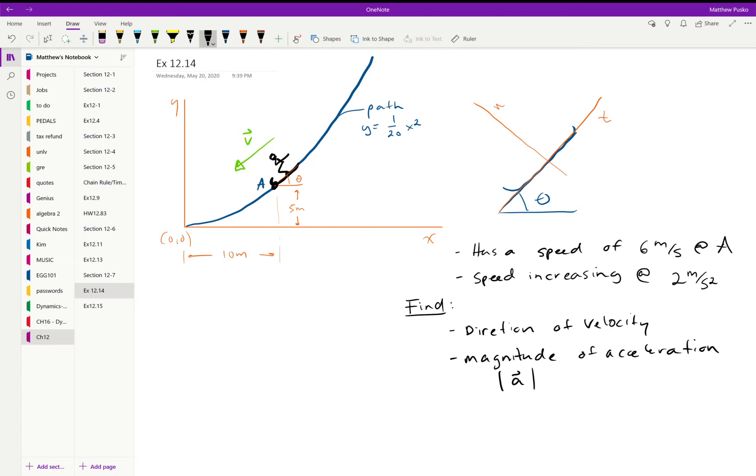That's a speed, so it's tangential to the path right there. To make it a velocity, we need to know the direction. The first thing it asks for is the direction of the velocity, then it wants to know the magnitude of his acceleration.